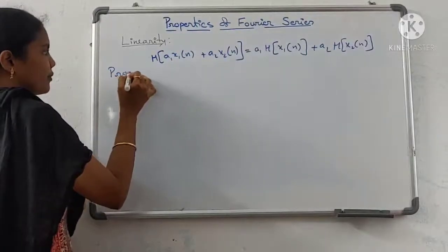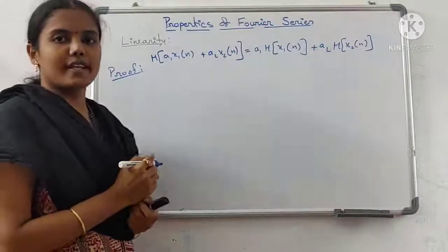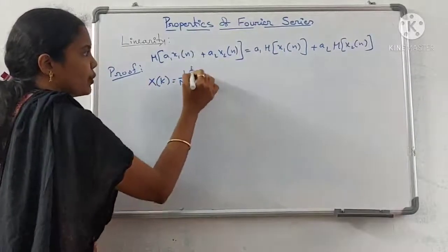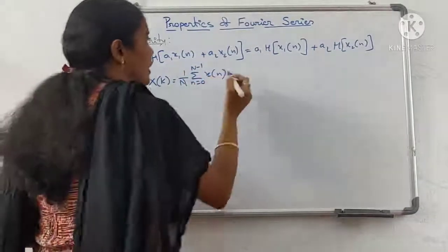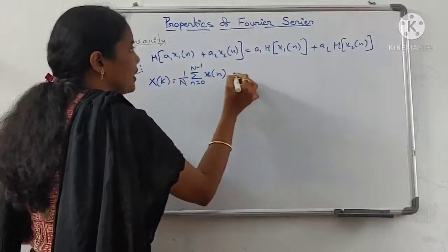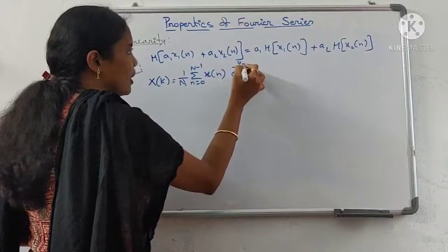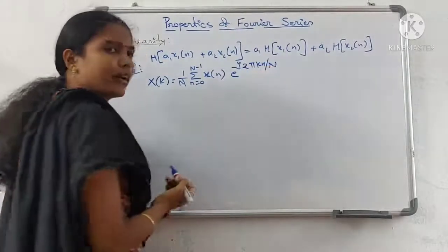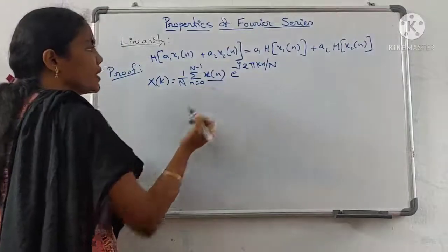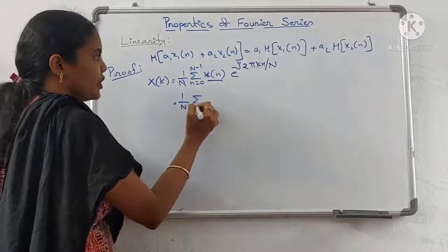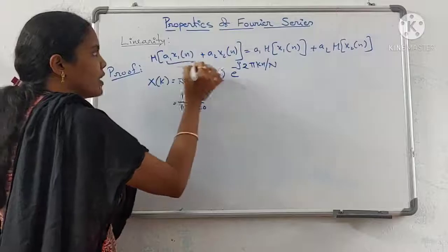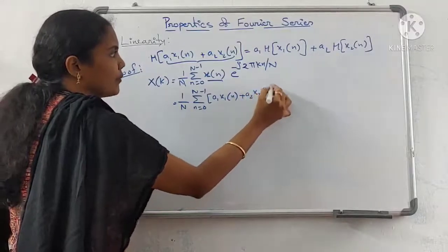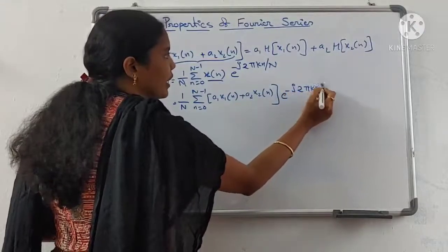Proof. The Fourier series coefficient X(k) is equal to 1/N summation from n=0 to N-1 of x(n) e^(minus j 2 pi k n / N). Here, x(n) is substituted as a1 x1(n) plus a2 x2(n), multiplied by e^(minus j 2 pi k n / N).